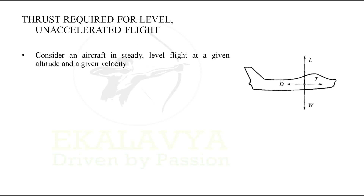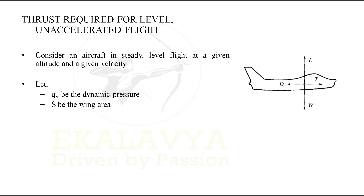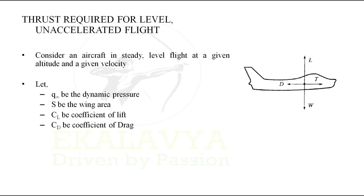Consider an aircraft in steady level flight at a given altitude and a given velocity, as shown in the figure. Let q-infinity be the dynamic pressure, S be the wing area, CL the coefficient of lift, and CD the coefficient of drag.